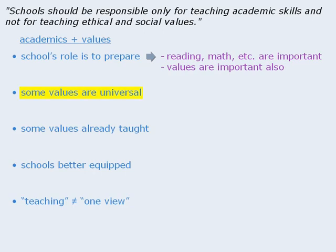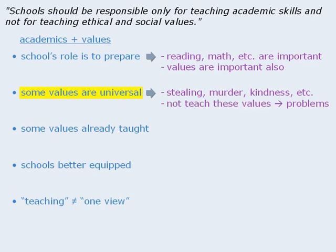What about the next point about some values being universal? Why is this a valid reason for adopting this position? Well, we might give some examples of how values related to stealing, murder, and kindness are universal and should be taught. We might also discuss the societal problems that might arise if schools do not teach these universal values.